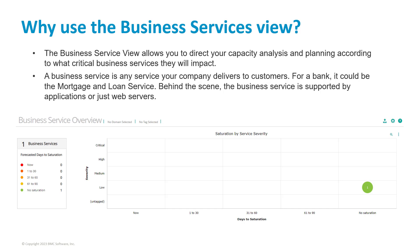Let's explore these new terms. A business service is any value-added service that is delivered to customers. Sometimes a business service consists entirely of an IT service, such as an e-commerce website or delivering goods to customers. A service pool is a group of resources that form an infrastructure or technology layer, also known as a tier, within an application or a business service.